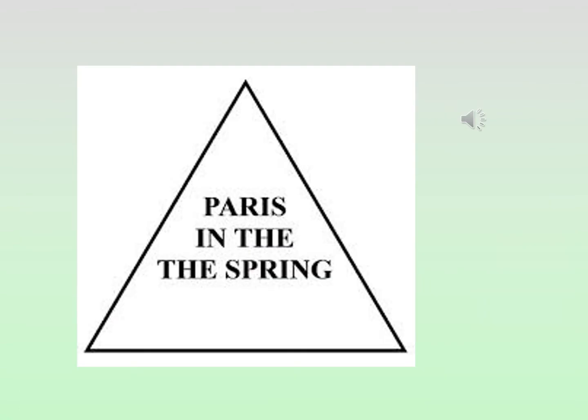In this slide, if you read what's in the triangle, most of you probably read 'Paris in the spring,' because your mind just takes in the whole big picture and it doesn't register that this actually says 'Paris in the the spring.' Your mind tunes that out. That's another example of a gestalt principle called closure — we tend to fill in the gaps, and our mind skipped the repeated 'the' because it doesn't make sense to us.